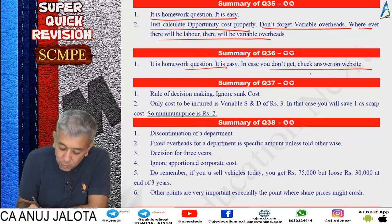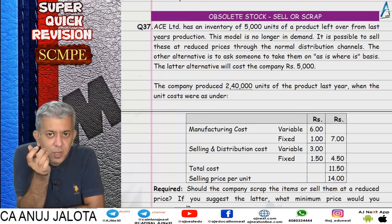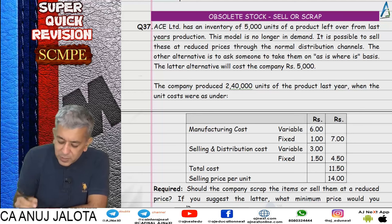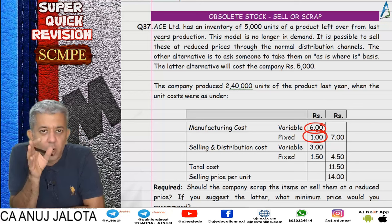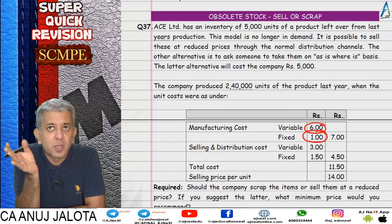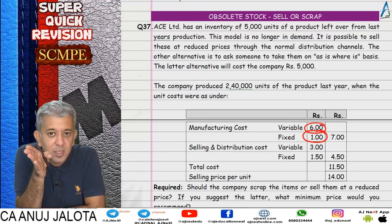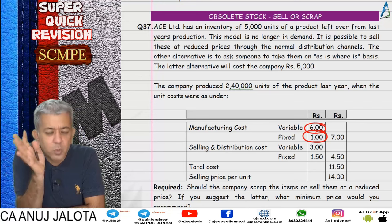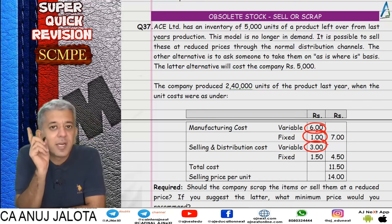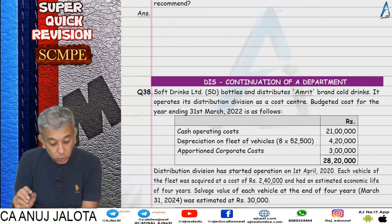Question 37: last year we produced 5,000 units of a product, but now there's no demand. We considered selling to a scrap dealer who says he won't buy unless we pay him 1 rupee to pick up the garbage. So we have two options: sell through normal distribution channels, or pay 1 rupee and scrap it. Costs already incurred are sunk - ignore them. If we sell, only cost is variable S&D of 3 rupees, but we save the 1 rupee scrap cost. So minimum price = 2 rupees. That was a small but good question.